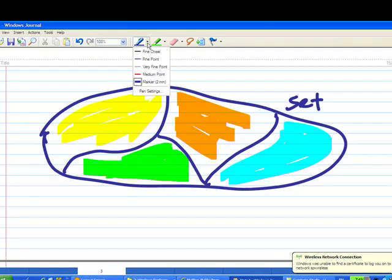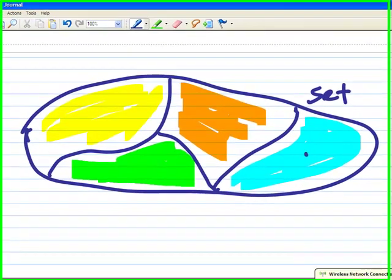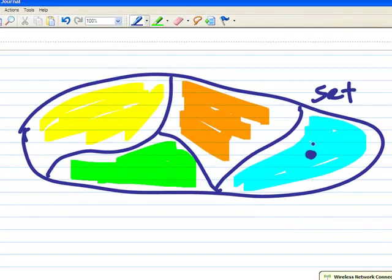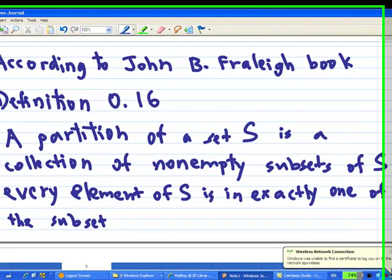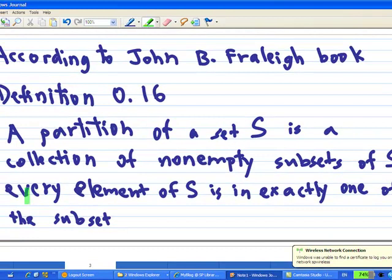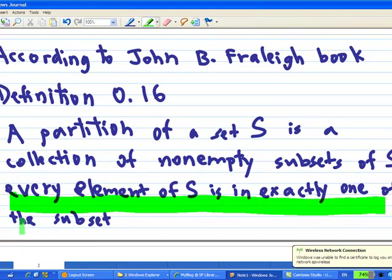So if I pick an element in the set somewhere here, you will find that this element belongs to the blue subset. It does not belong to blue and green, just one of the subsets only. This is what they mean that every element of S is in exactly one of the subsets.